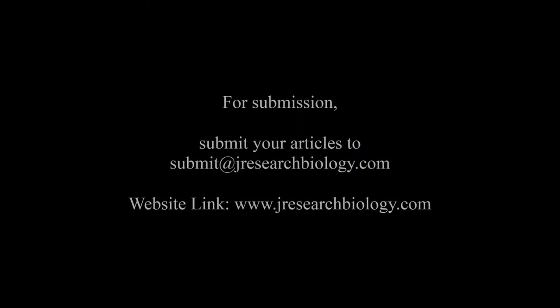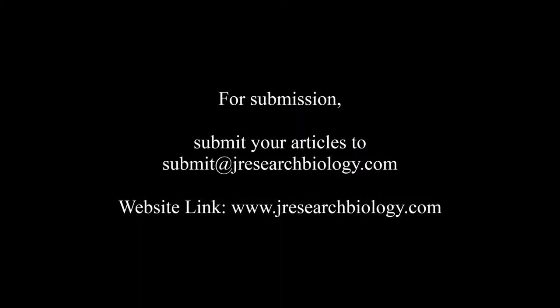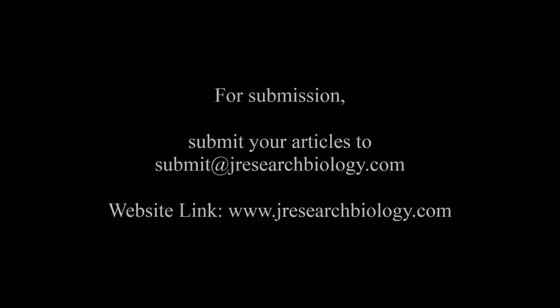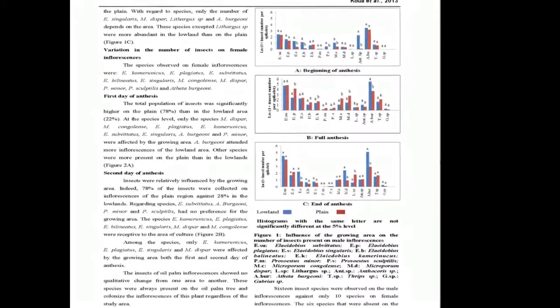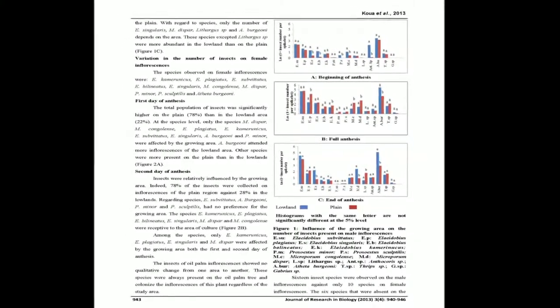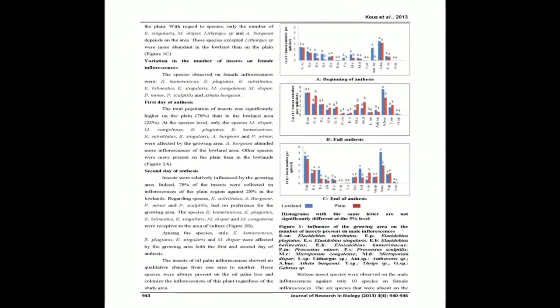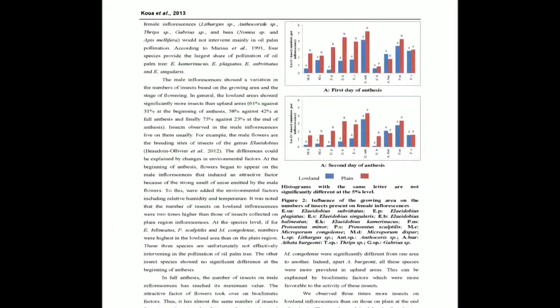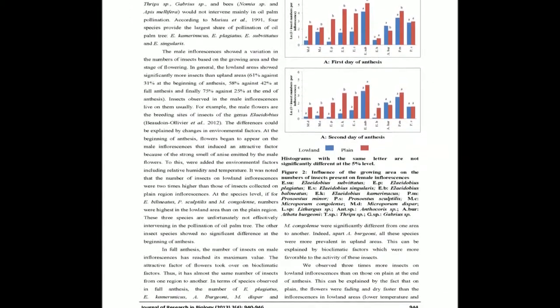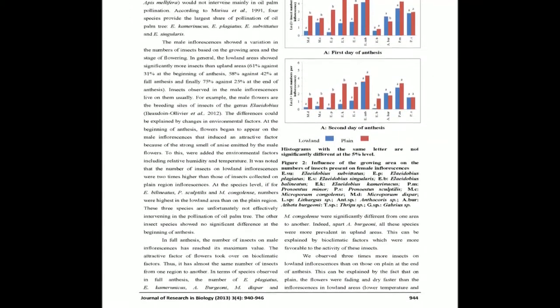Samplings were performed each month on male and female inflorescences during two years on plots in lowland and plain. The insects showed no qualitative change from one area to another. Sixteen species of insects were observed on the male inflorescences against ten species on female inflorescences. The inflorescences showed variation in the number of insects based on the growing area and the stage of flowering.